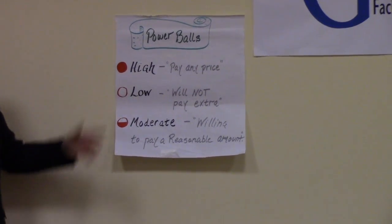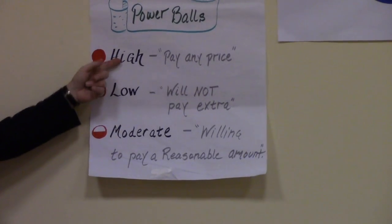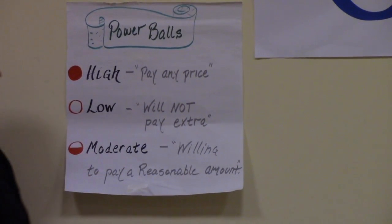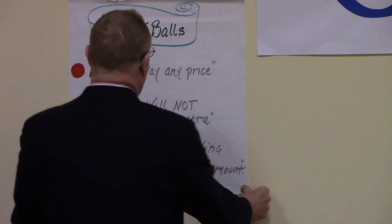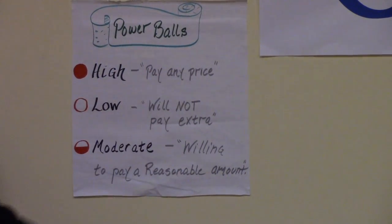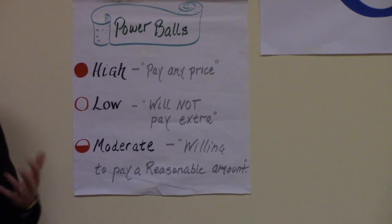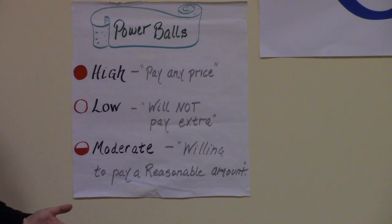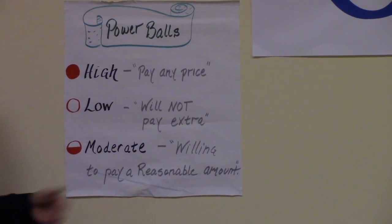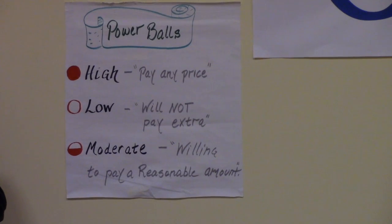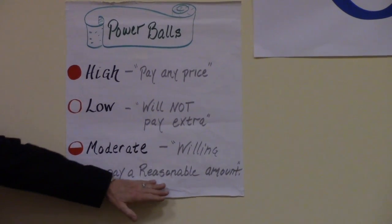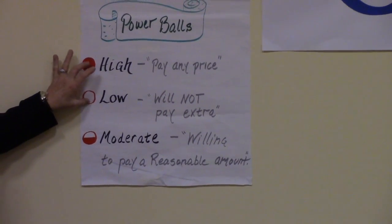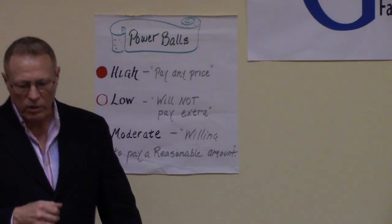Whether the terms in black change or not, we don't really care — this could be full, empty, half-full type of thing. We always rely on the economic definitions. These definitions resonate well with most any audience: high being mandatory, have to have it at any price; low meaning I'd like to have it but I'm not willing to pay any extra for it; and moderate being I'm willing to pay a reasonable amount. For decision quality, these are the two buckets that are key.